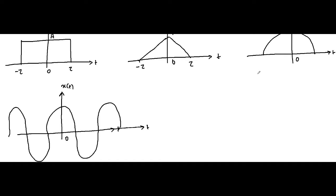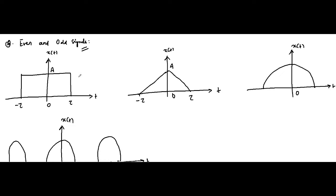For these signals, if you see the values — the signal values, the value of x(t) — for both sides, the negative time side and the positive time side, the values are symmetric for a particular instant of time. From minus tau to tau it is the same on both sides; the value is constant 'a'.